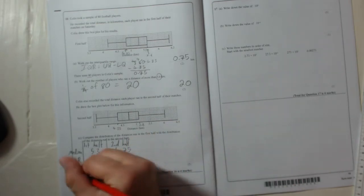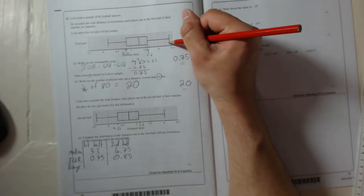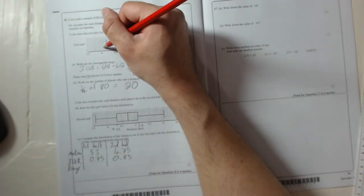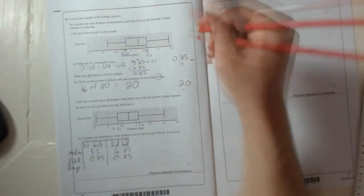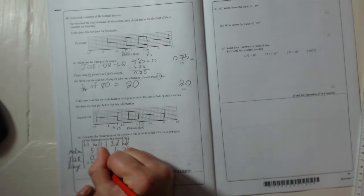Okay, and then the range. Biggest take away smallest. So here, 6.4, this is the first half, 6.4 take away 4.1, 4.2. So 6.4 take away 4.2, which is 2.2.